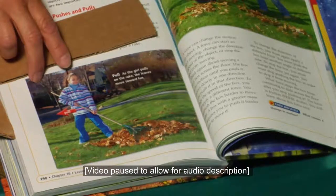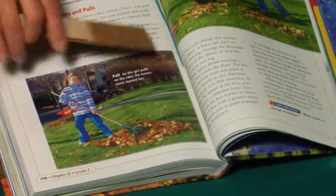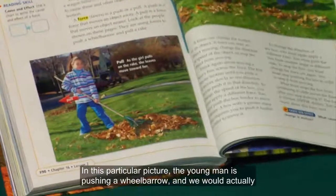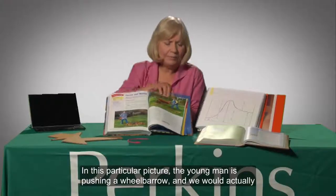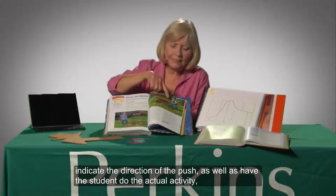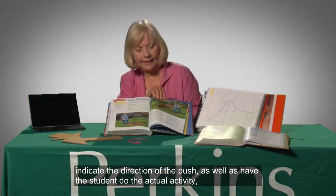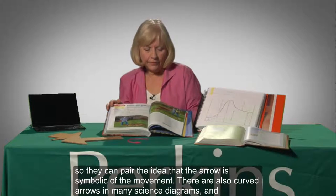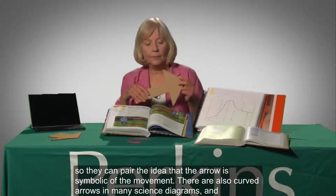We see the picture of a young girl raking. Kate holds a cardboard arrow above the image pointing to the direction of the rake when the girl pulls it. She then describes the picture of a boy using a wheelbarrow. In this particular picture, the young man is pushing a wheelbarrow, and we would actually indicate the direction of the push as well as have the student do the actual activity, so they can pair the idea that the arrow is symbolic of the movement.